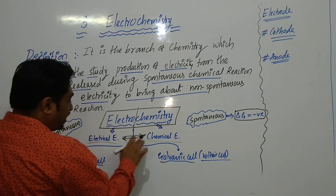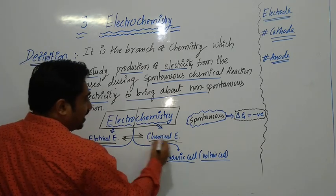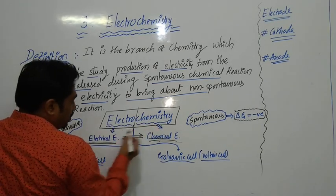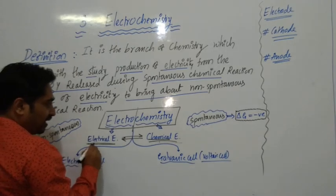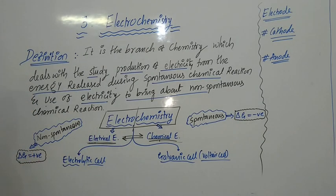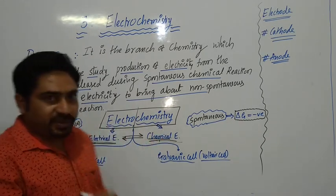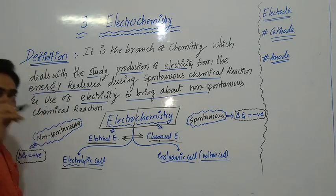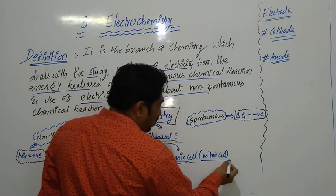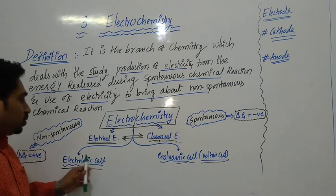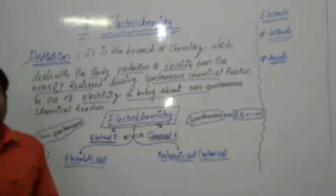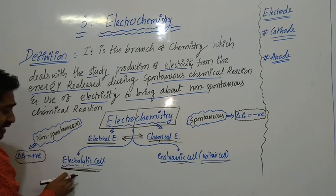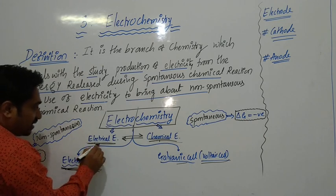In this topic we are mainly going to deal with how to convert electrical energy into chemical energy and how to convert chemical energy into electrical energy. In electrochemistry we deal specifically with two types of devices or cells. The first one is called the electrolytic cell, and the second one is called the galvanic cell or voltaic cell. The galvanic cell or voltaic cell are also called electrochemical cells.